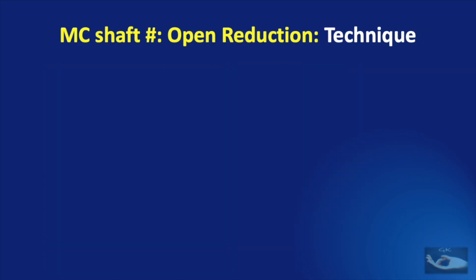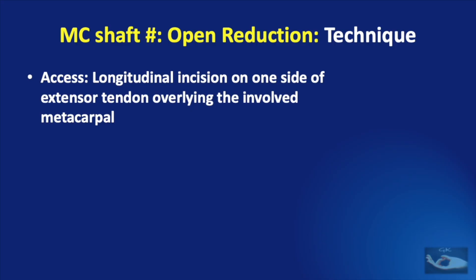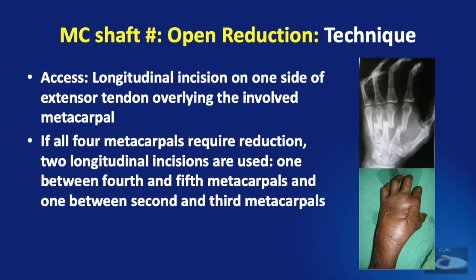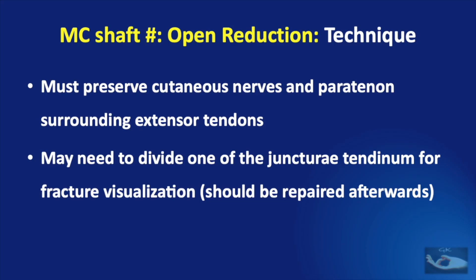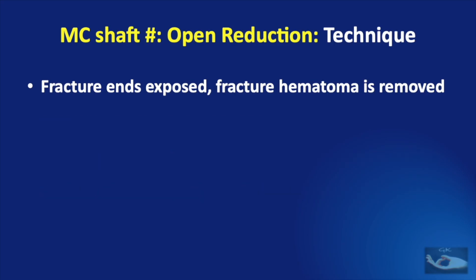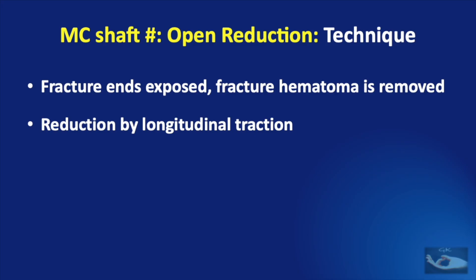The method of open reduction entails the following. To access the fracture, a longitudinal incision is made on the dorsum of the hand on one side of the extensor tendon overlying the involved metacarpal. If all 4 metacarpals require reduction, two longitudinal incisions are used — one between the 4th and 5th metacarpals and one between the 2nd and 3rd metacarpals. Care must be taken to preserve the cutaneous nerves and the paratenon surrounding the extensor tendons. There may be a need to divide one of the juncturae tendinum for fracture visualization, and this should be repaired after fixation. The fracture ends are then exposed, the fracture hematoma is removed, and reduction is achieved by longitudinal traction.